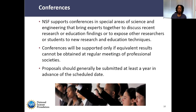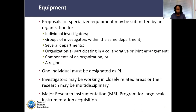Equipment proposals — when you think equipment, you may think of our Major Research Instrumentation program or MRI, but equipment proposals are much smaller in magnitude. Track one for MRIs is $100,000 to less than $1 million, and track two is $1 million to $4 million — that's not this. These proposals provide something for a discipline or department that can help carry out research by having access to a specialized piece of equipment. As with conference proposals, there are detailed and specialized instructions in the PAPPG for equipment proposals, and those instructions should be followed.